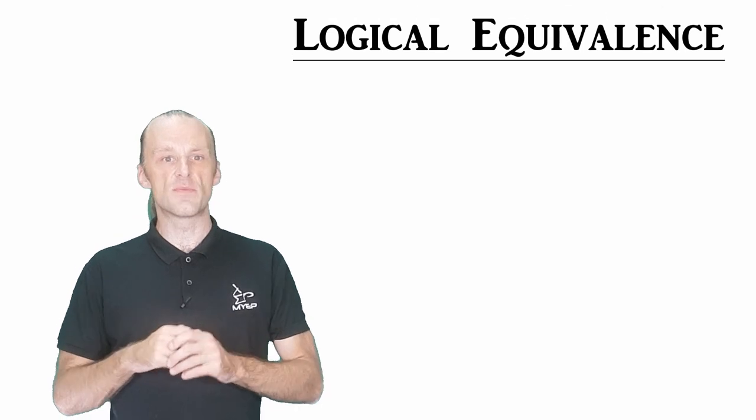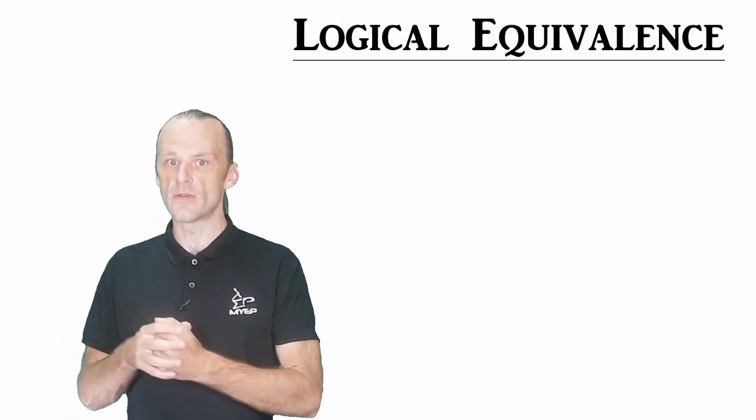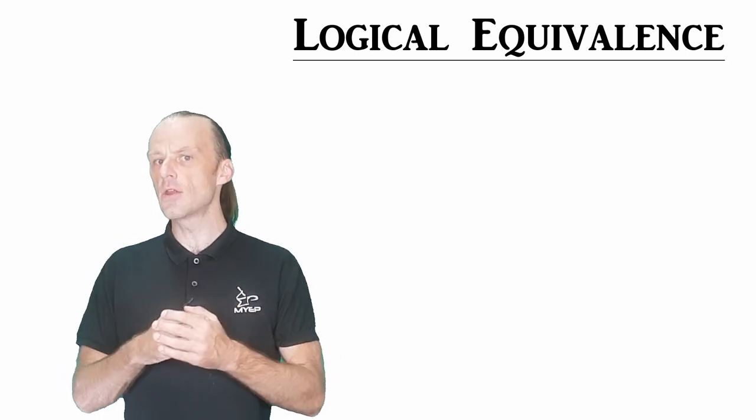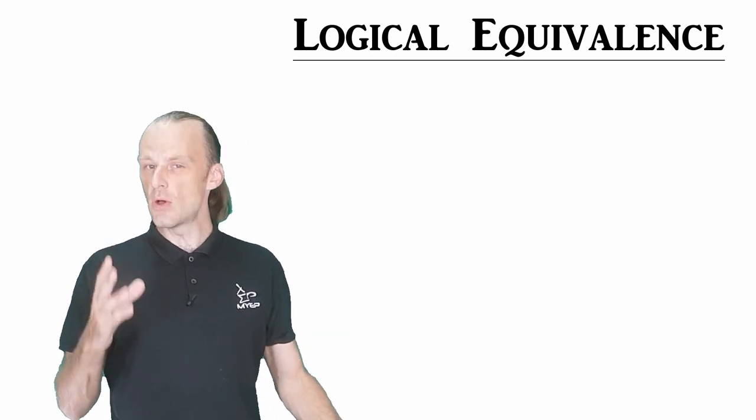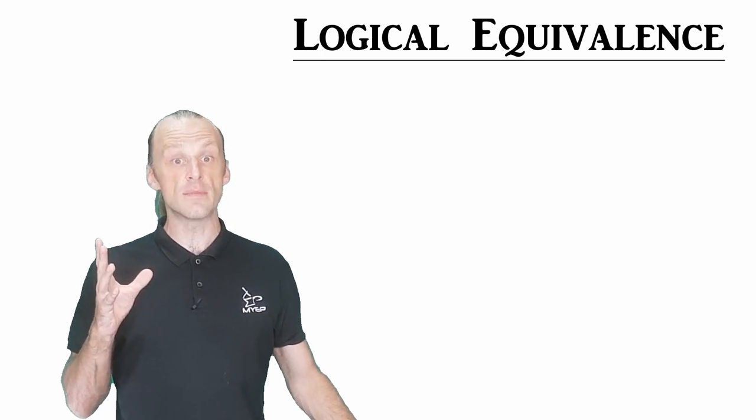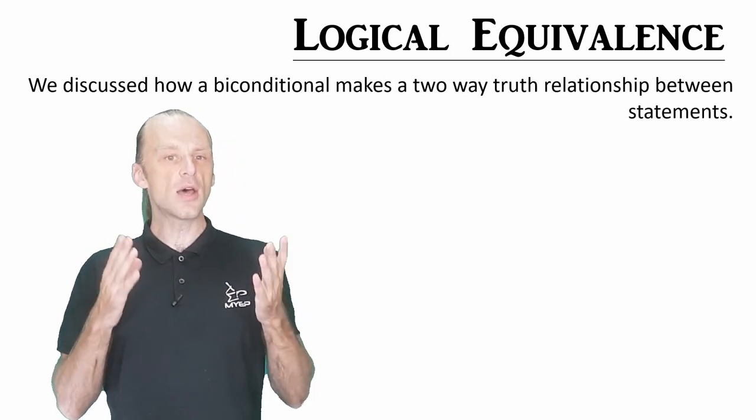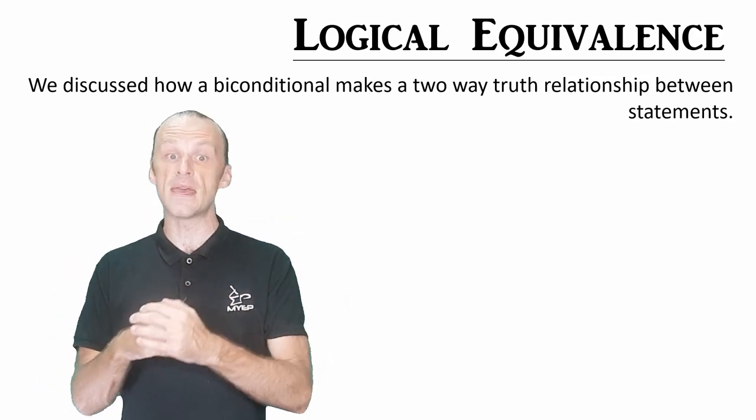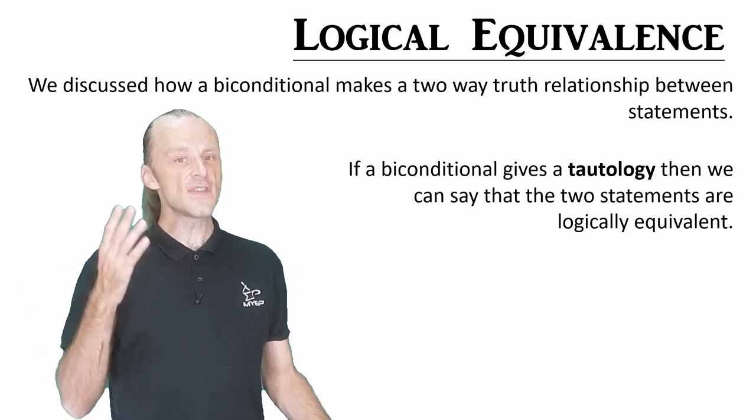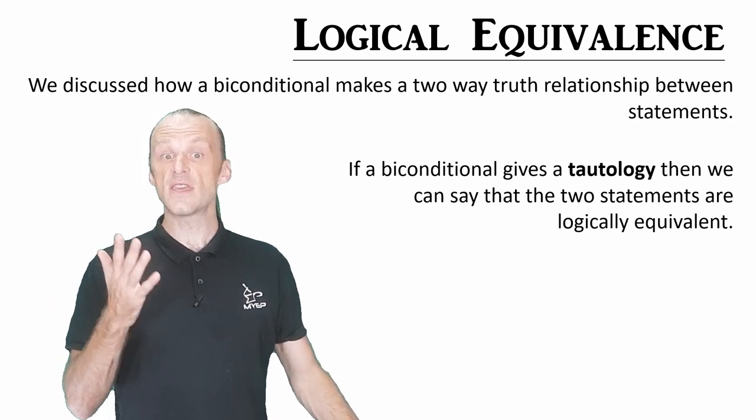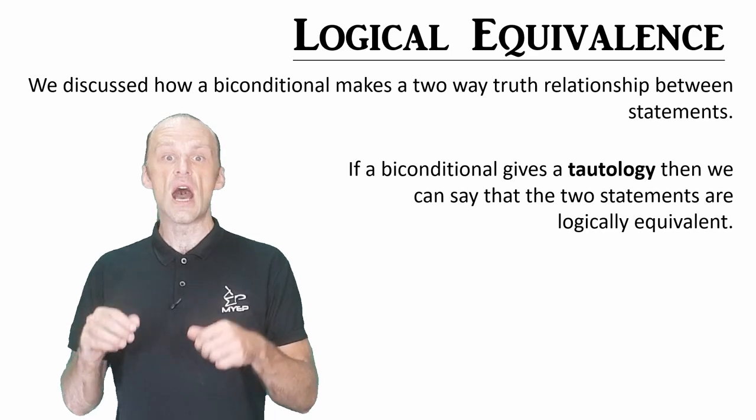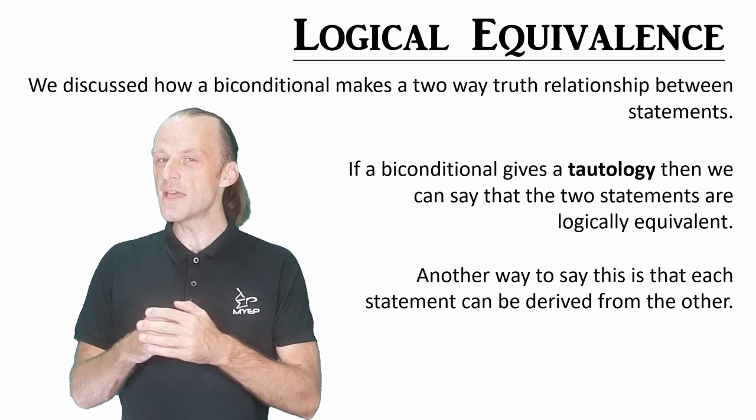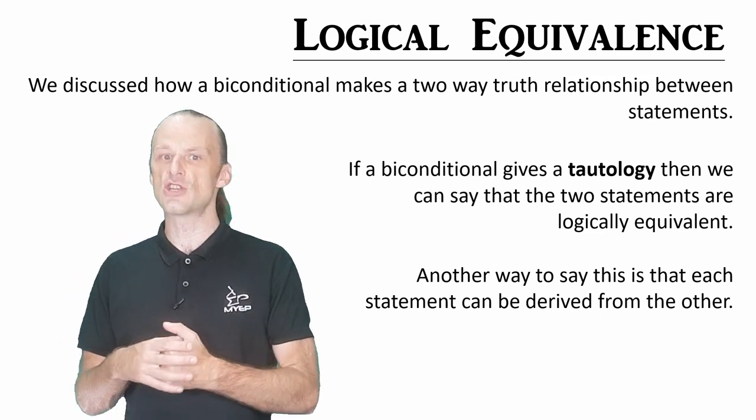There is one more idea I want to bring up, and that is logical equivalence. This starts to lead towards part four where we talk about how to make logical arguments without language. It's possible for us to say that two statements are logically the same. In part two, we talked about the biconditional and the two-way relationship it makes between statements. If this biconditional gives a tautology, then we can say that the two statements are logically equivalent. They say the same thing. Another way to say it is they can be derived from each other.